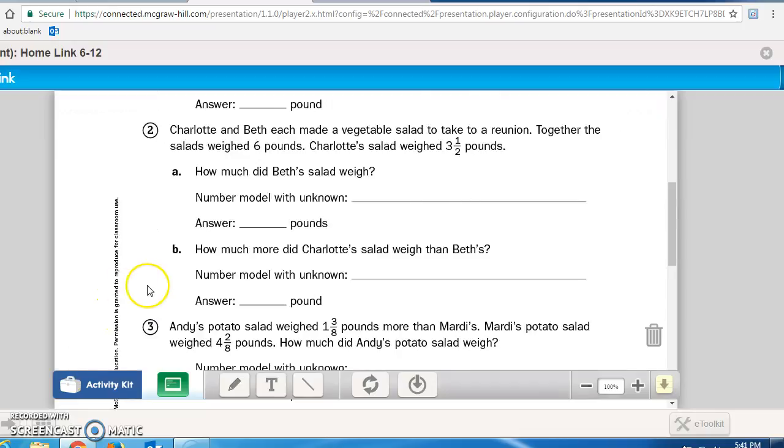Problem two says, Charlotte and Beth each made a vegetable salad to take to a reunion. Together, the salads weigh six pounds. Charlotte's salad weighed 3 and 1/2 pounds. How much did Beth's salad weigh? Well, if you know the total is six and you're taking away Charlotte's salad, the 3 and 1/2 pounds, what's Beth's salad weigh? That's your unknown. Equals, I'd put a B for Beth's salad. Write that down in pounds. B says, How much more did Charlotte's salad weigh than Beth's? Well, you have to know what Beth's salad weighed and then you have to take away the 3 and 1/2 that Charlotte's weighed to figure out that in pounds.